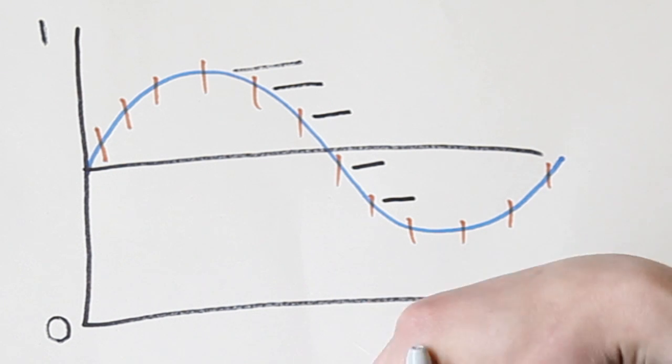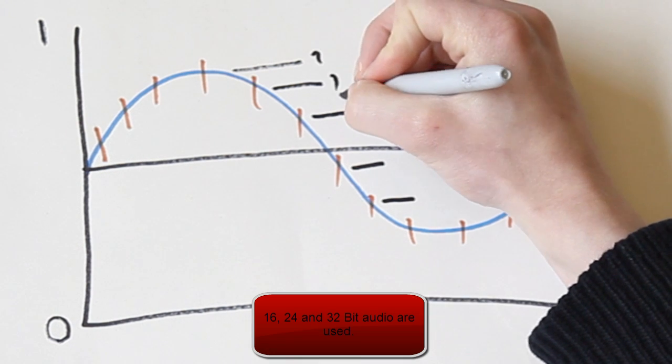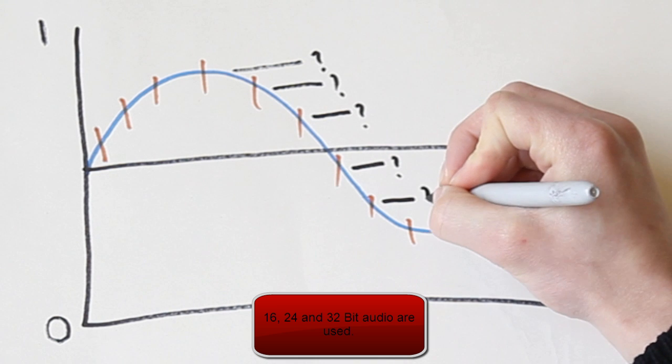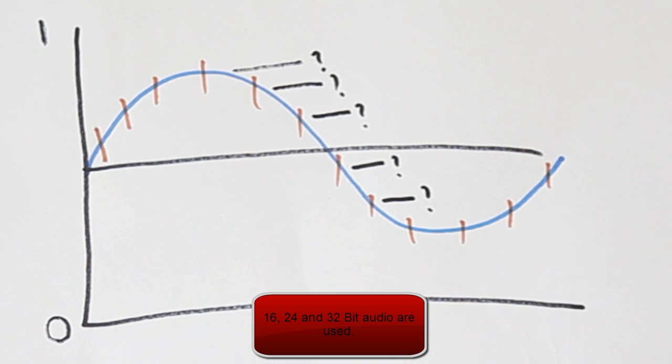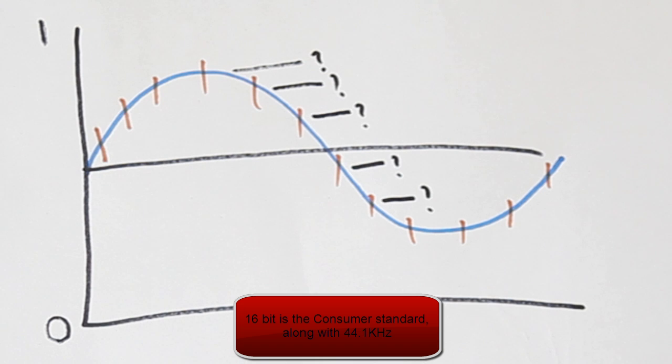This is known as bit depth, and 24 and 32 bit bit depths are also used in professional audio to give extra resolution to maintain quality through the production process, but 16 bit is the consumer standard.